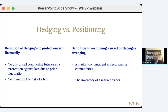Hedging and positioning. The straightforward definition of hedging is to protect oneself financially. This is usually to buy or sell a commodity futures contract to protect against a loss in price fluctuation. This can be done on a commodity itself, or on stock positions where you essentially want to buy a position that will move in the opposite direction of the position you've taken. It's an instrument you buy when investing to reduce losses should they occur.